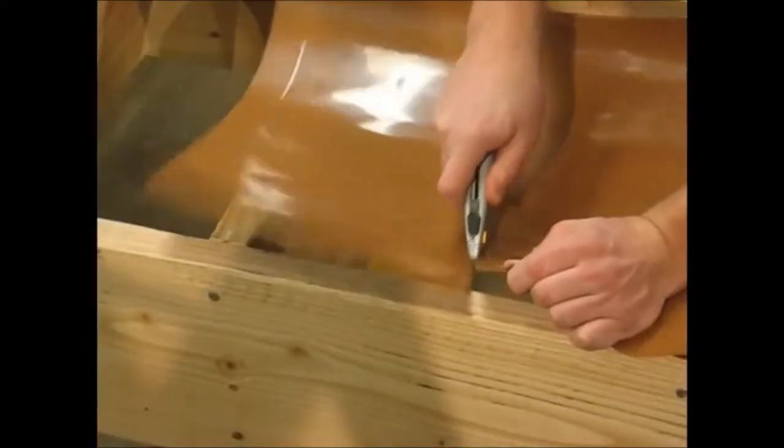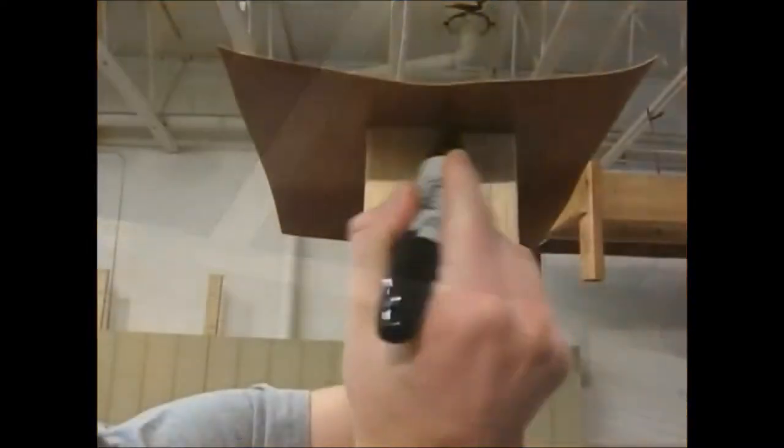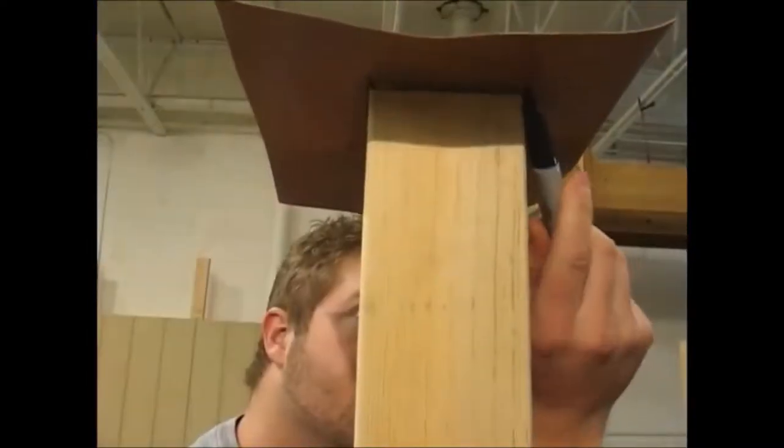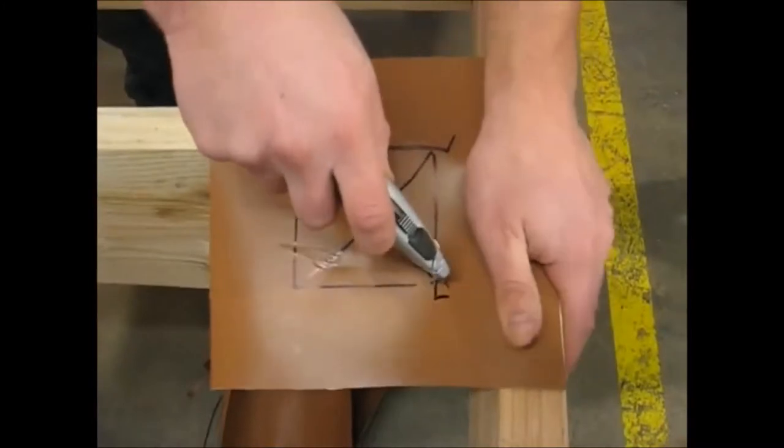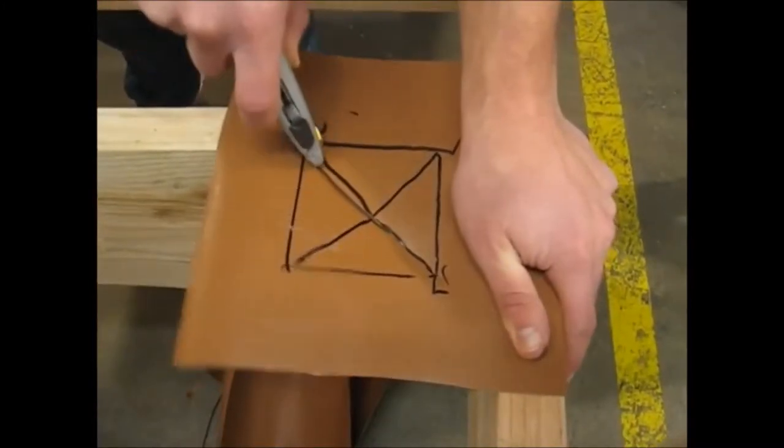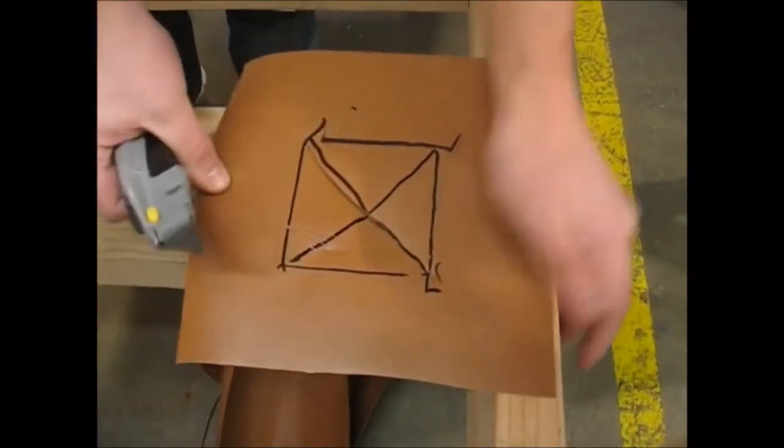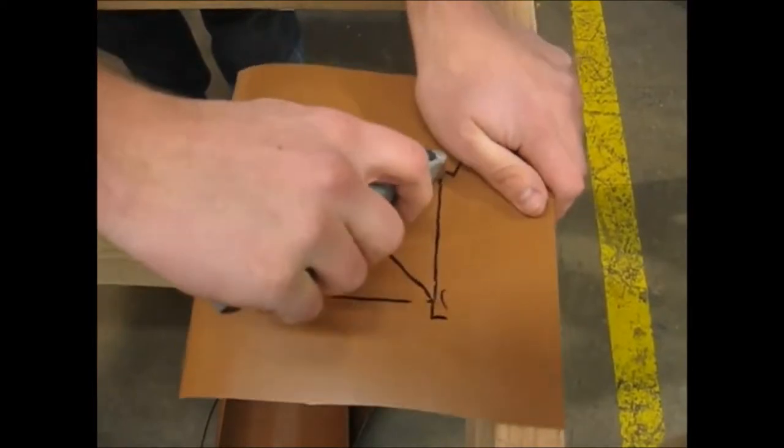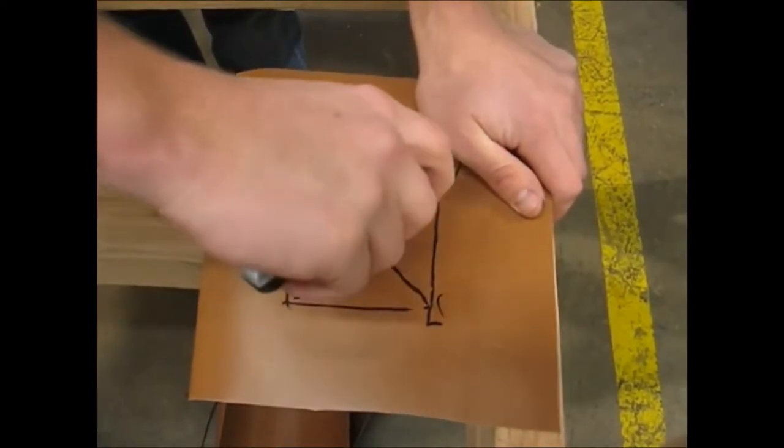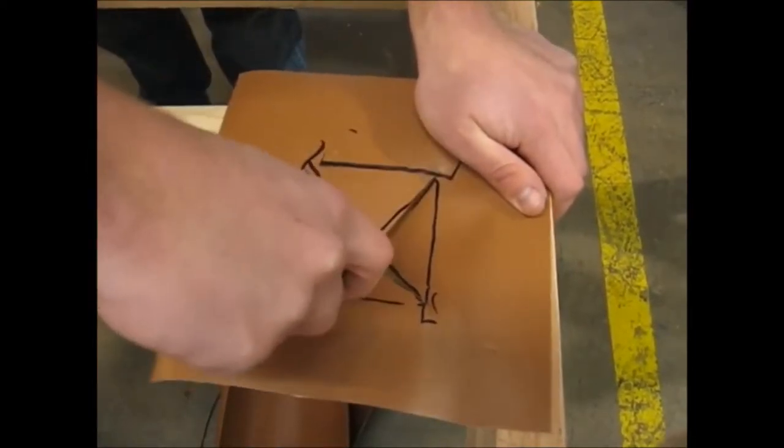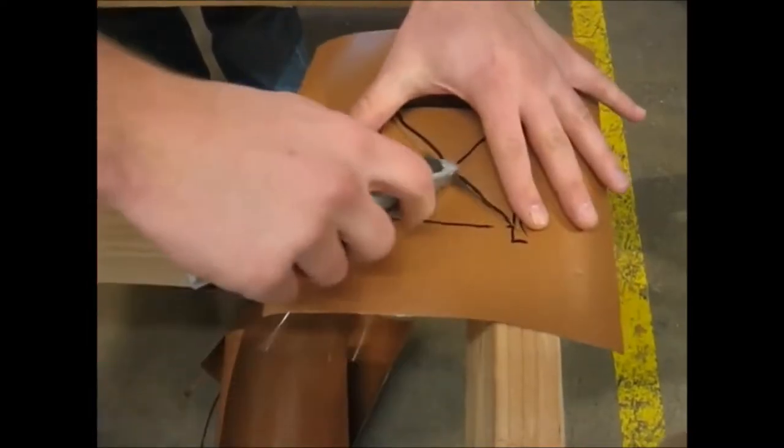Using scrap trough material, cut a square piece of trough material about 3 to 4 inches wider than the obstruction. Trace the obstructions and cut corner to corner so you have four triangles that bend up.